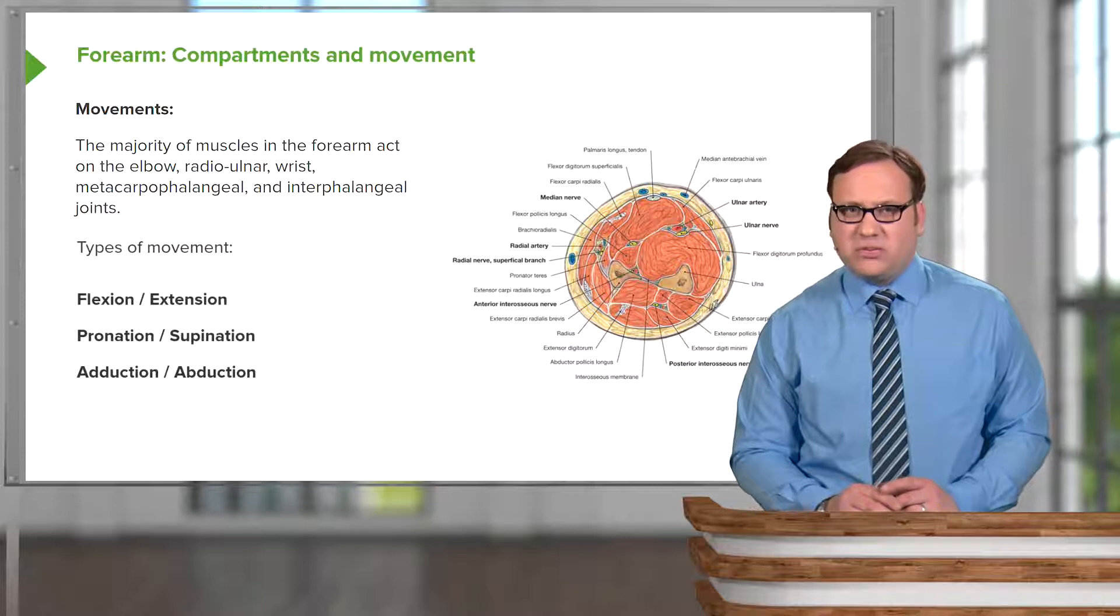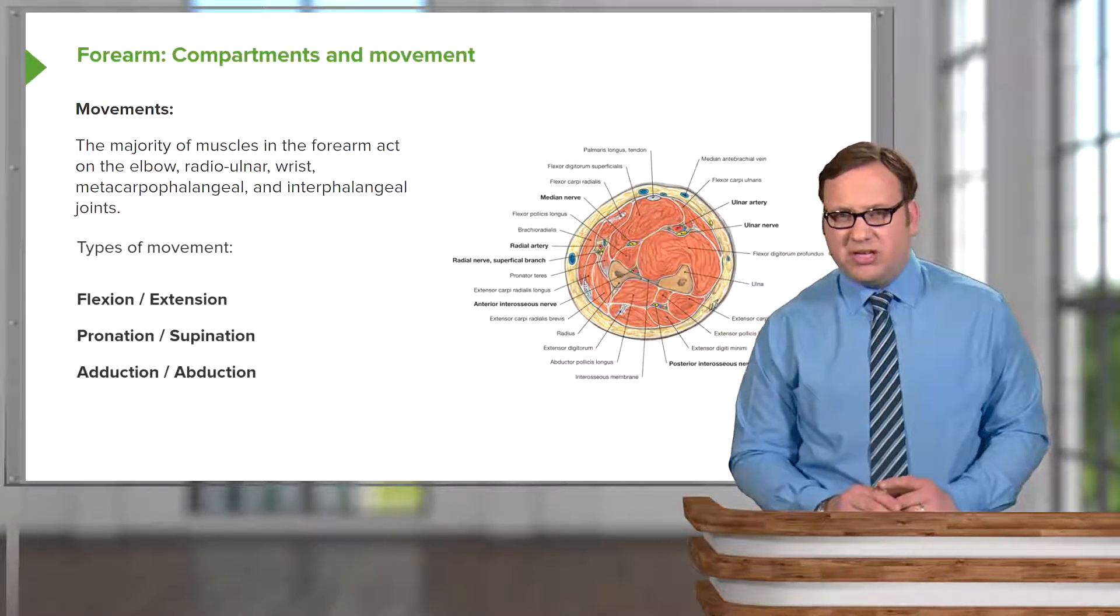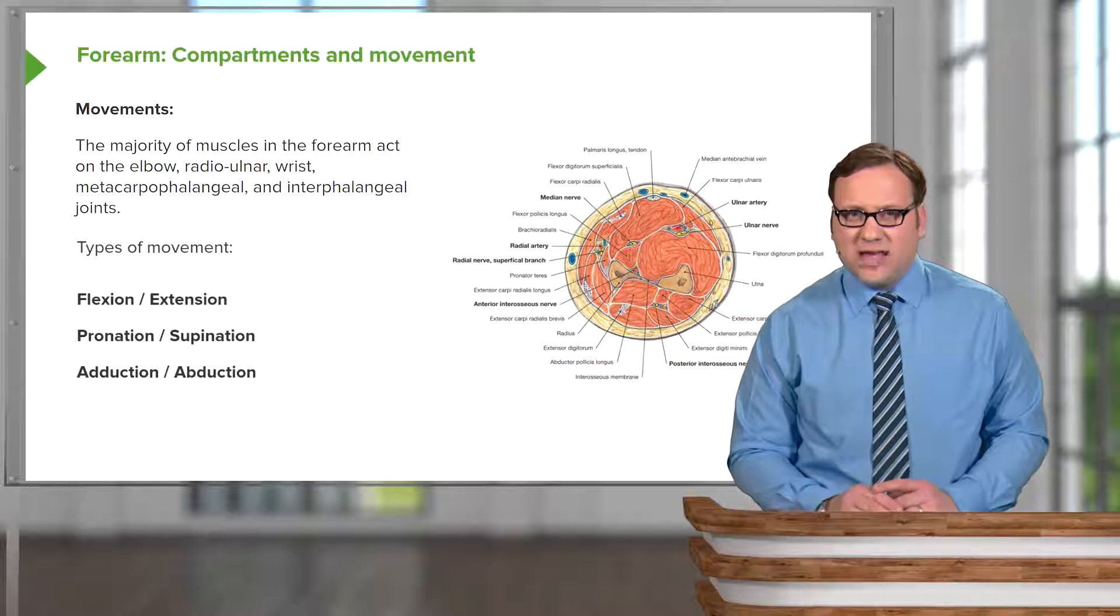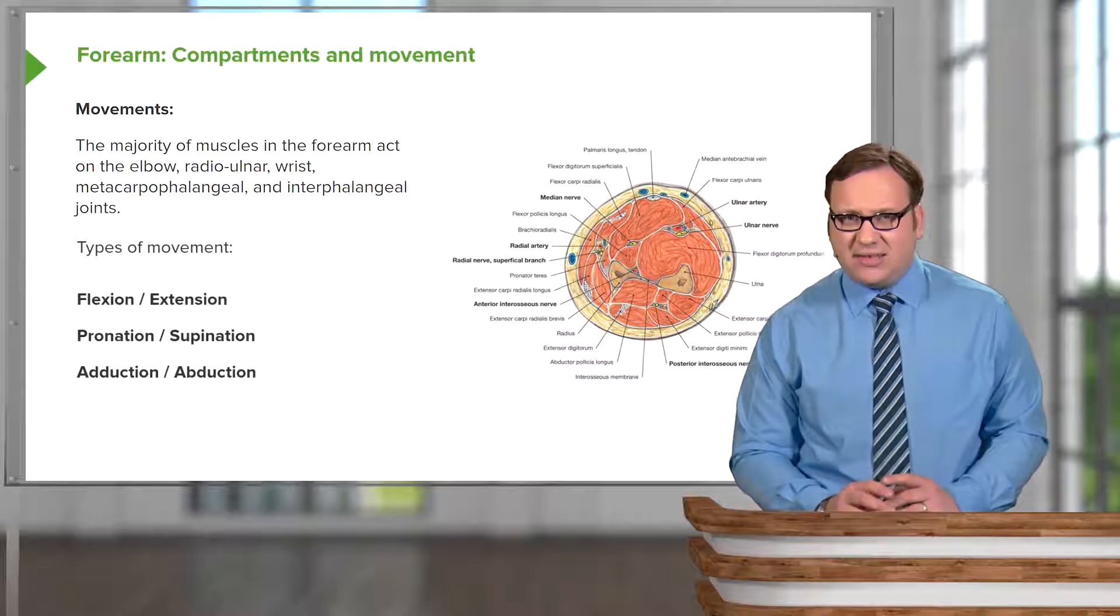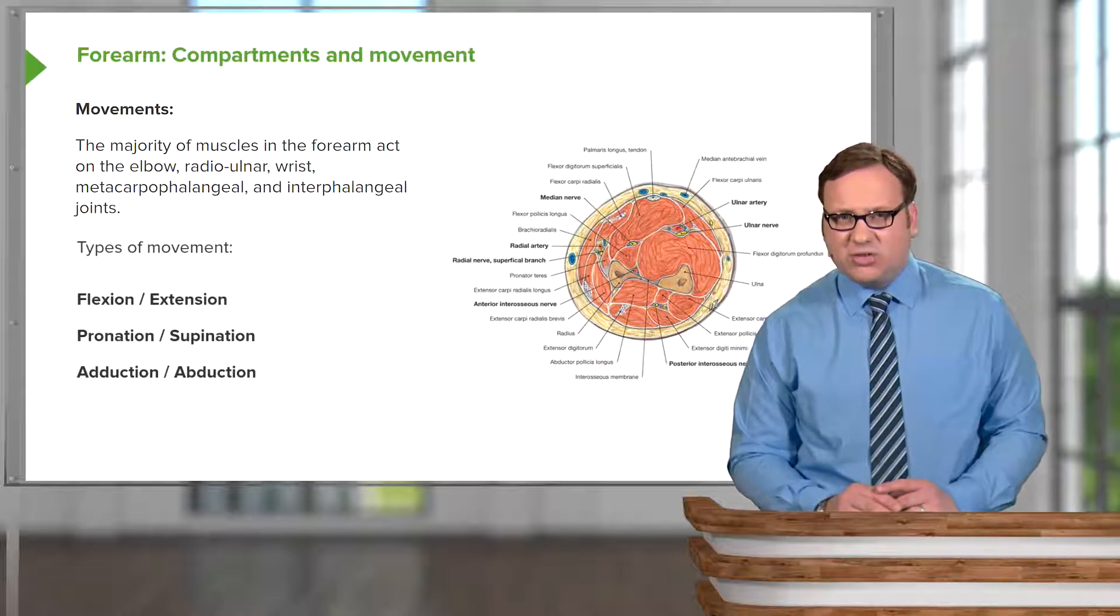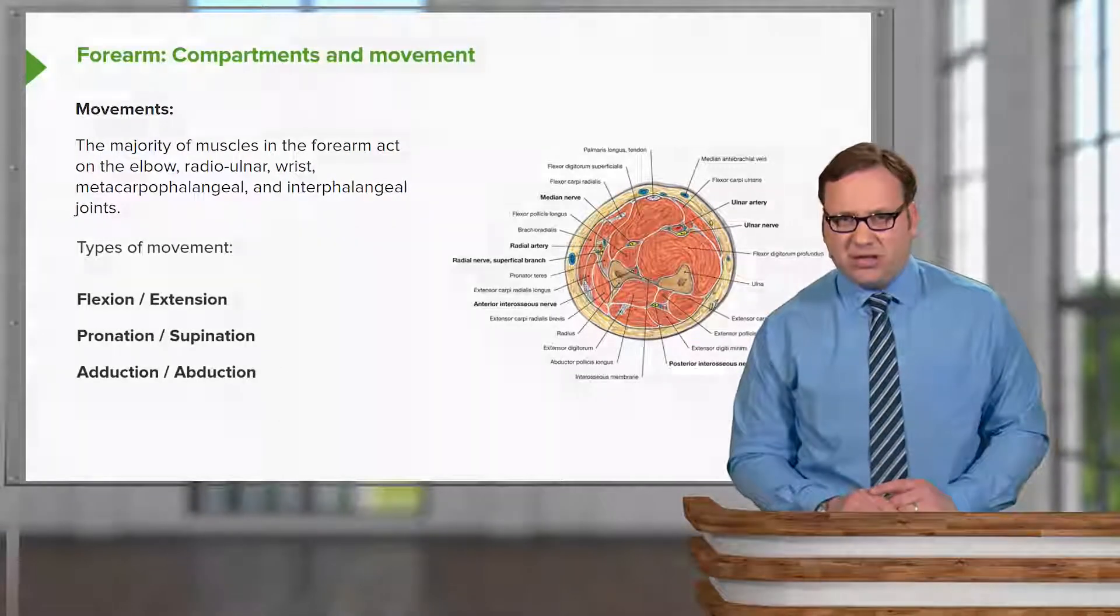At the radial ulnar joints, we have pronation and supination. And we'll look at some important muscles that do that. And also at the wrist joint and at the metacarpophalangeal joints, we can have adduction and abduction.